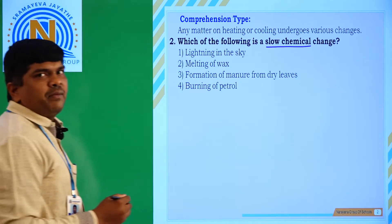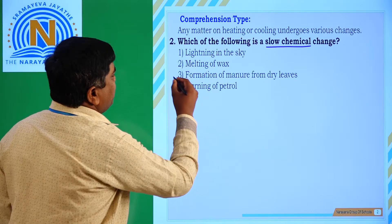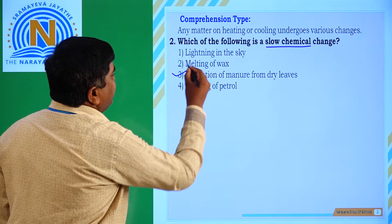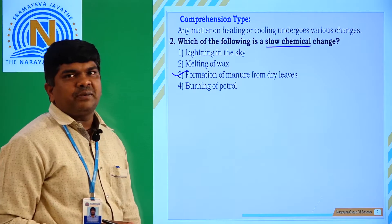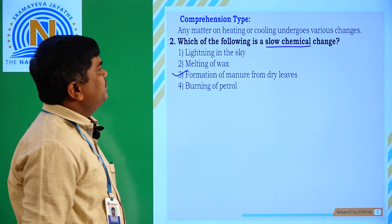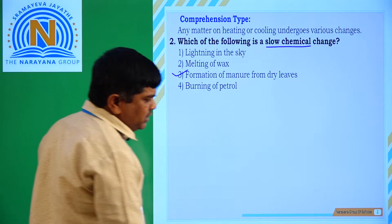A slow chemical change is the formation of manure from dry leaves. Option 3 is correct.